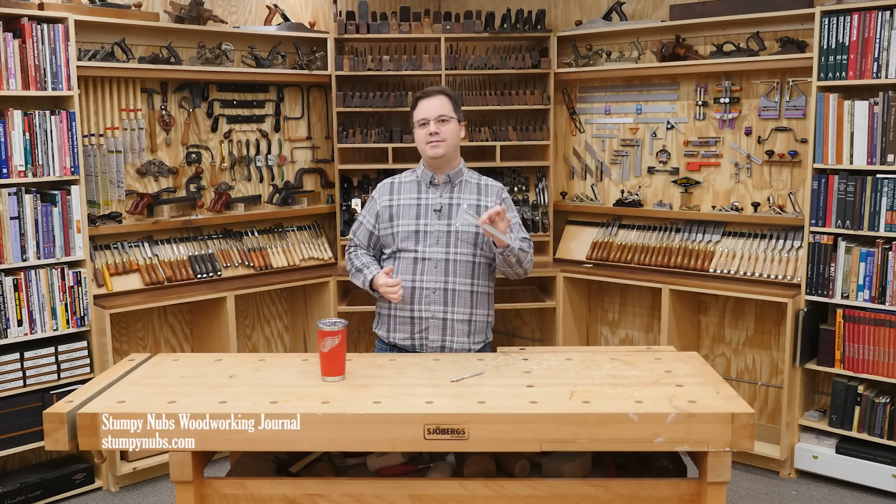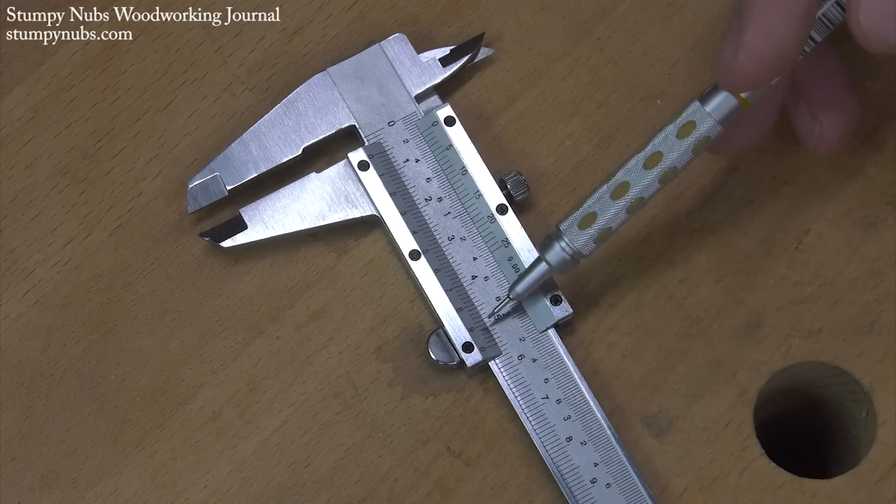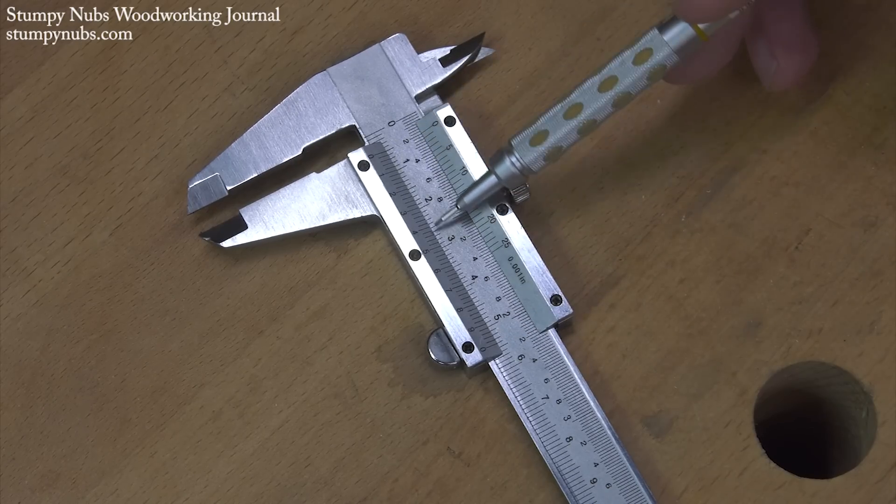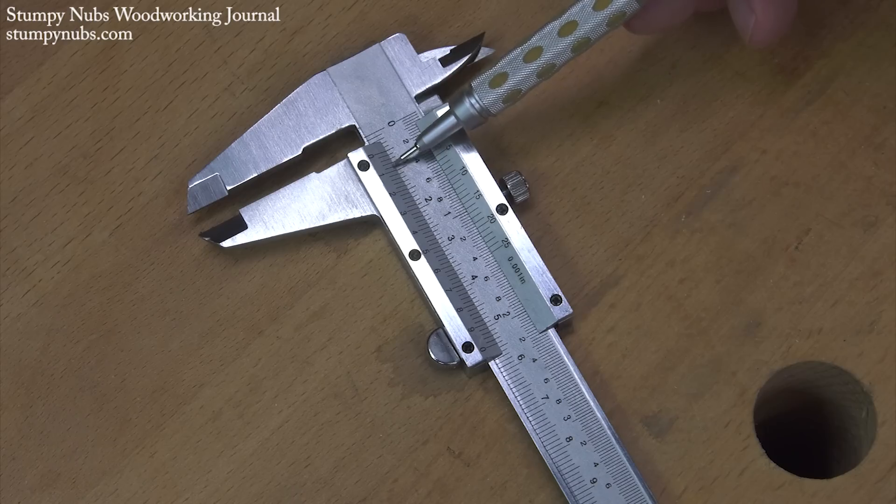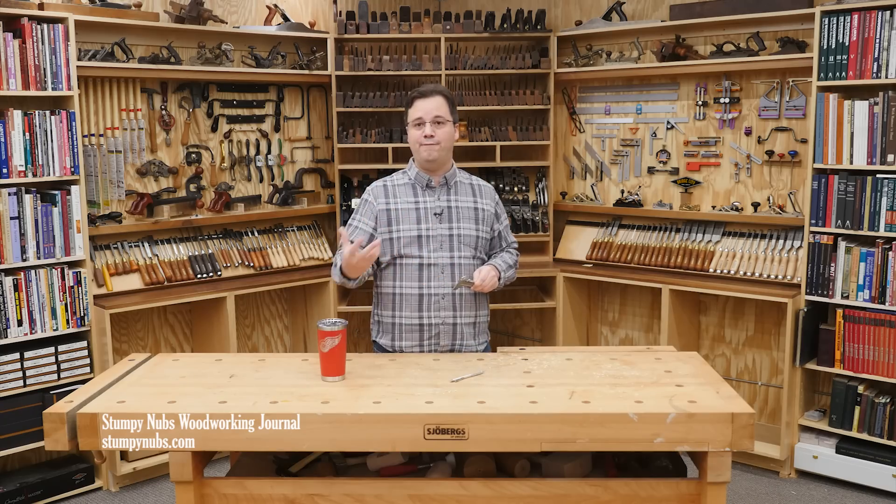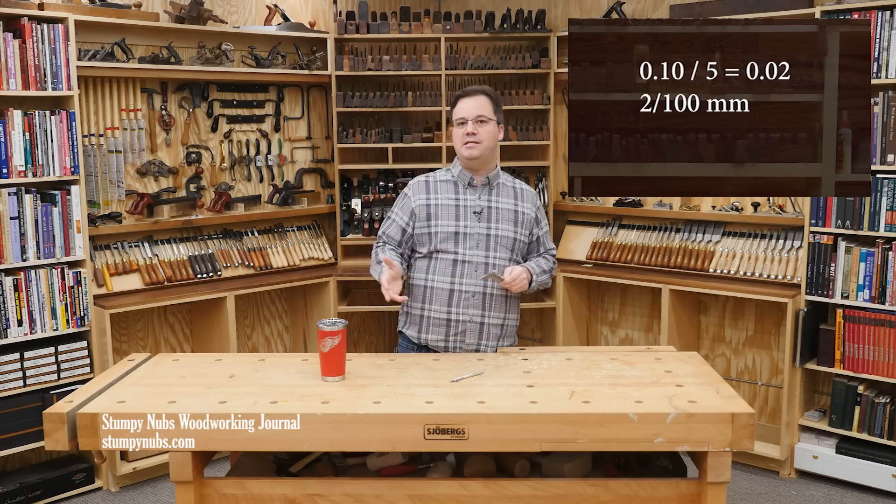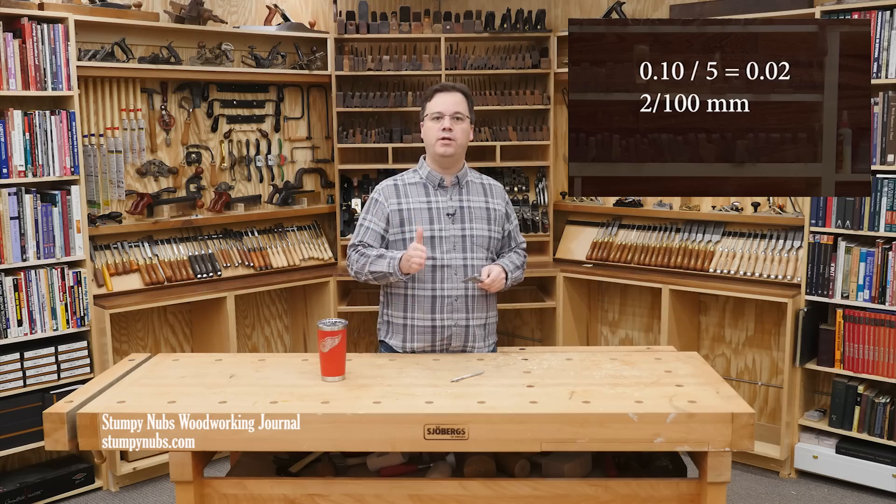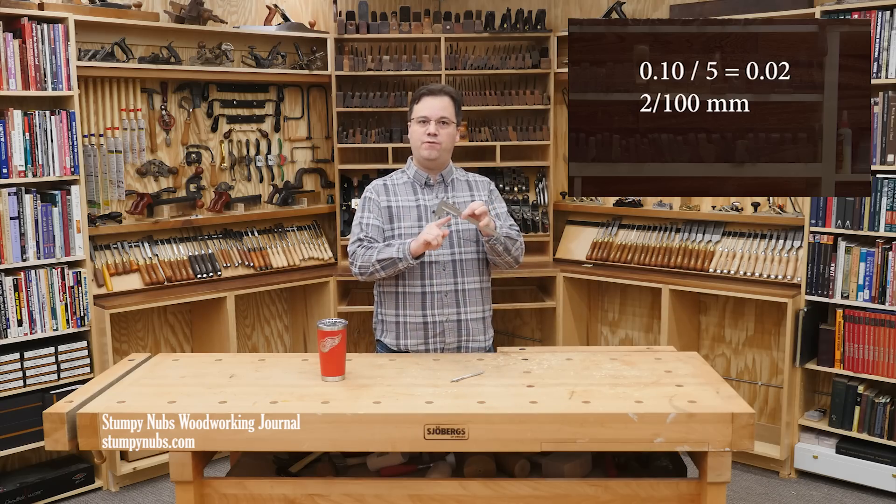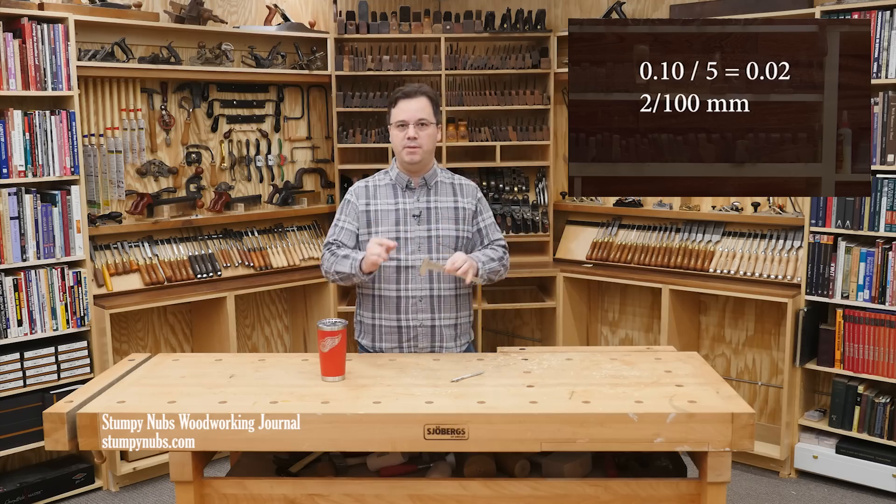Those marks are tenths of a millimeter, or point one millimeters. Each of these are divided further into five finer increments. To determine the decimal equivalent for those finer marks, you have to divide your point one by five. So, add a zero, like I said before, and you can easily divide point one-zero down to point zero-two. Therefore, each of the fine marks on the vernier scale represents two hundredths of a millimeter.